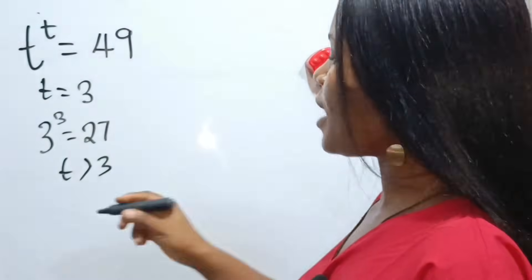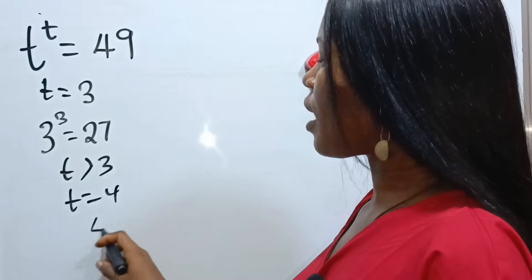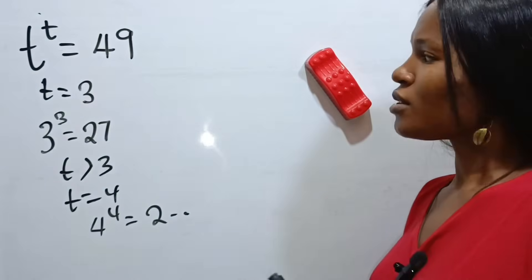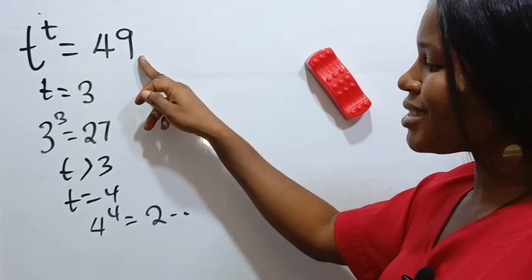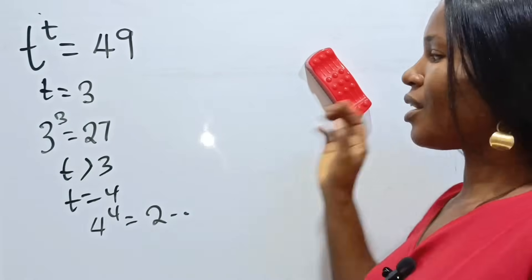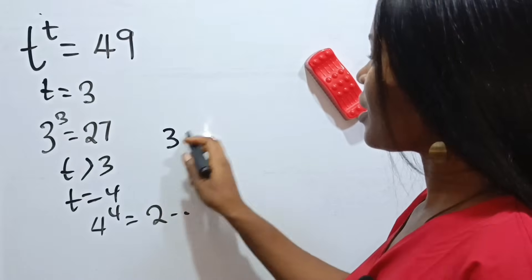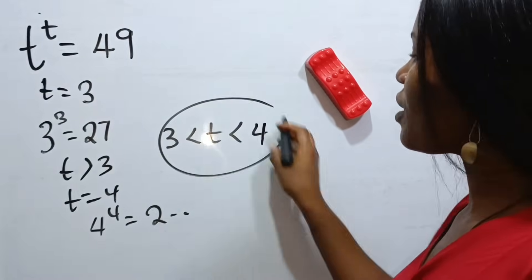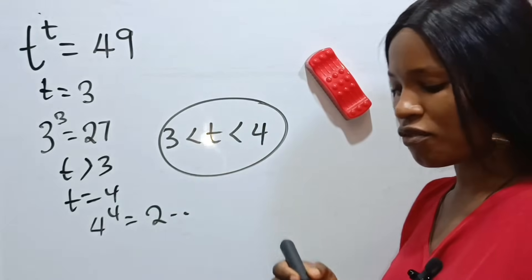We keep going. If we say let t be equal to 4, now, 4 to the power of 4 is going to give us 256. So, it's bigger than this. So, it simply means that our t is less than 4, but greater than 3. So, it means that 3 is less than t, which is less than 4. That means the value of t lies between 3 and 4.